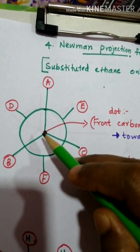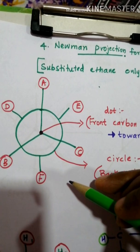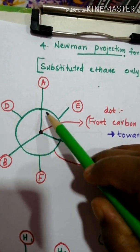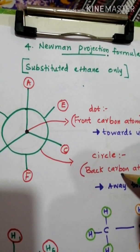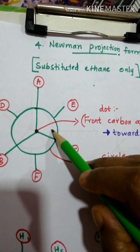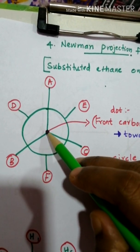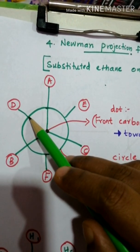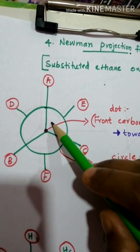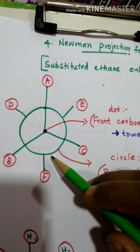In the Newman projection, we can see a dot and a circle. The dot represents the front carbon, which is facing towards us. The circle represents the back carbon, which is oriented away from us. The bonds on the dot are facing towards us, and the bonds on the circle are oriented away from us.